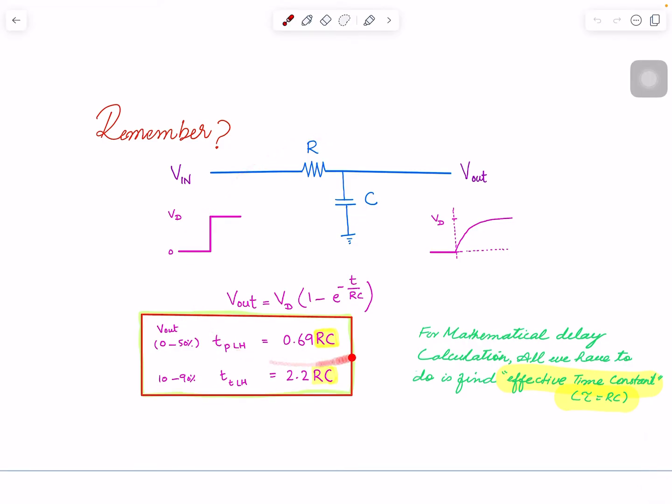Remember this thing I explained in past videos in the delay series. When we have a circuit with resistance and capacitance grounded, you apply a voltage between this point and ground - a step voltage that goes from 0 to 1 or 0 to supply voltage abruptly. This is an ideal scenario.